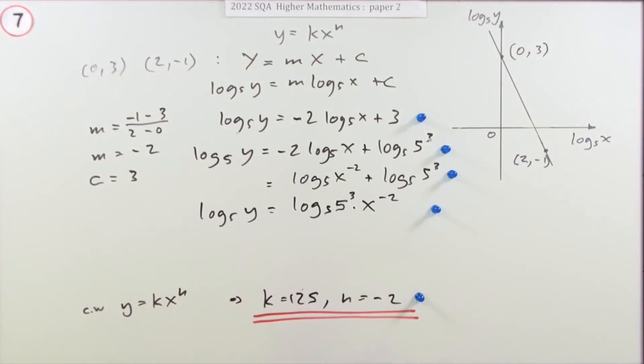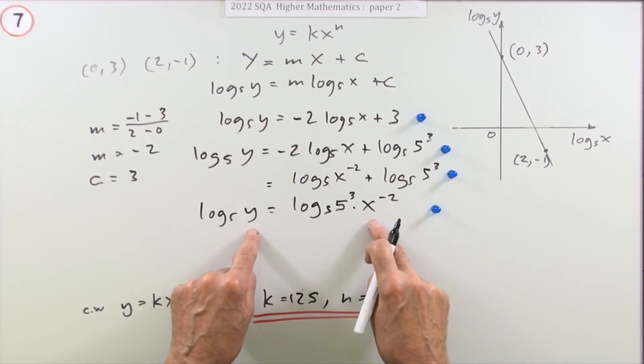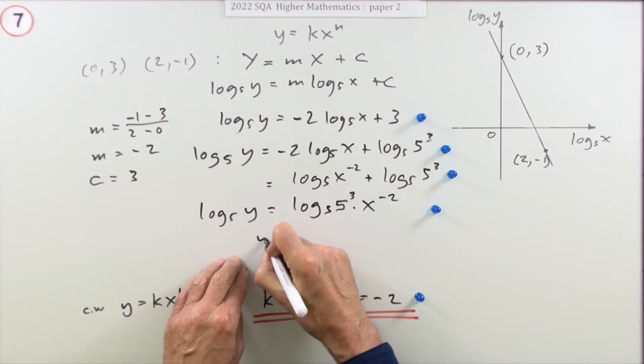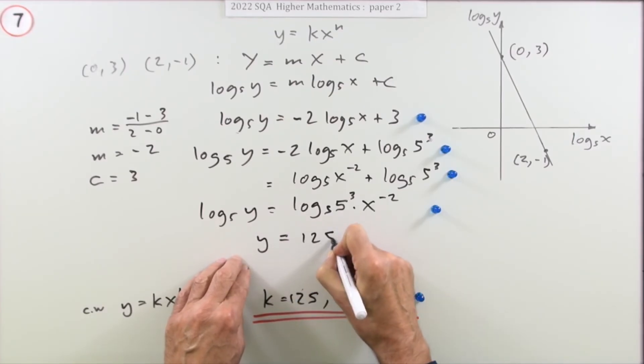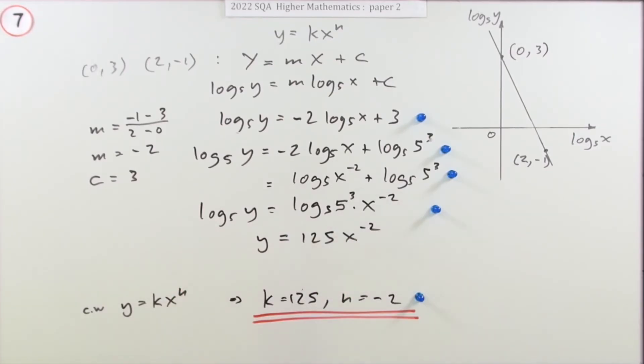No mark for this next bit though. And then just saying this. Well if the log of that equals the log of that, those two things must be the same to give the same answer. So y equals 125 x to the -2. And then compare it with the original to extract them.